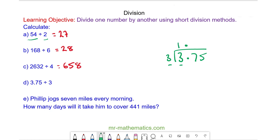Now you can see 3s into 3 go once. 3s into 7 you can see go twice with 1 left over. So we carry the 1 to the next column.